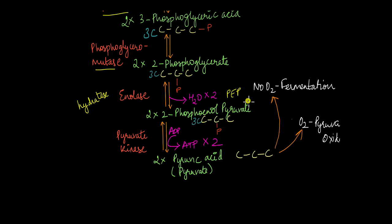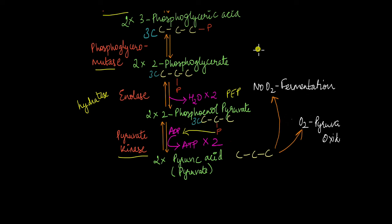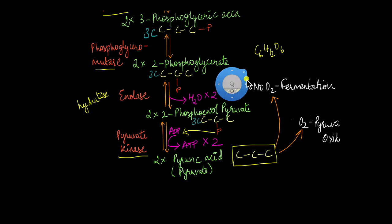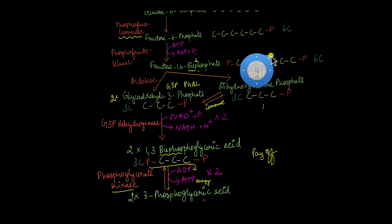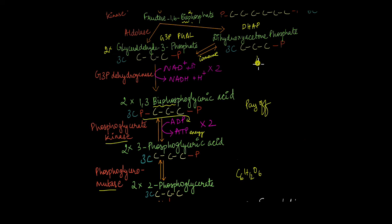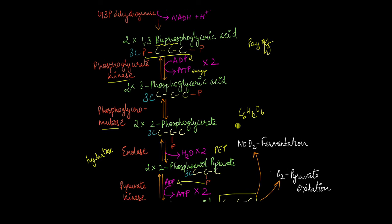The last step in glycolysis involves converting two molecules of phosphoenolpyruvate to two molecules of pyruvic acid or pyruvate. The enzyme pyruvate kinase removes the phosphate group from phosphoenolpyruvate, adds it to ADP, and converts it to ATP — so two more molecules of ATP are produced here. The resultant 3-carbon molecule formed is pyruvate. So we started with a 6-carbon molecule, glucose, and ended with a 3-carbon molecule, pyruvate. In the process, 2 ATPs were used and 2 NADH and 4 ATP were produced.